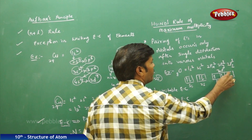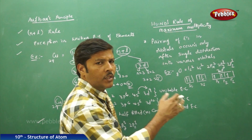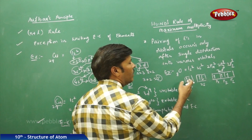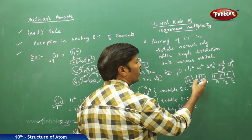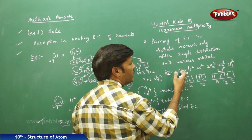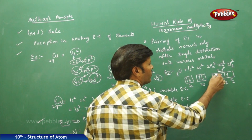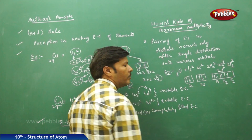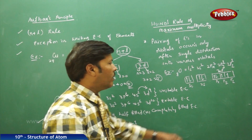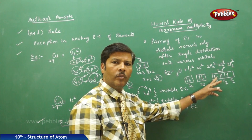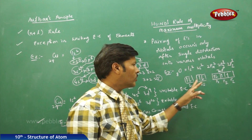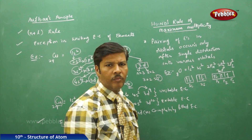Single distribution of electrons occurs first across the degenerate orbitals. Since oxygen has atomic number 8, after placing 2 electrons in 1s, 2 in 2s, and distributing singly in the three 2p orbitals (giving 6 electrons so far), one more electron is filled in the Px orbital with anticlockwise spin. This configuration obeys both Hund's rule and Pauli's exclusion principle.